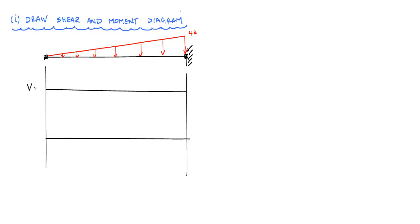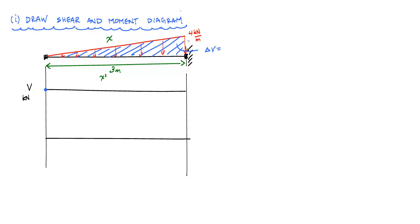Here the shear diagram V has units of kilonewtons, and the beam is three meters in length. With a linearly distributed load, the shear diagram will be parabolic — x squared — starting from zero at the free end and decreasing parabolically. The change in shear equals the area under the loading, which is one-half base times height: one-half times three meters times four kilonewtons per meter equals six kilonewtons. So I draw a parabolic shear diagram down to minus six kilonewtons.